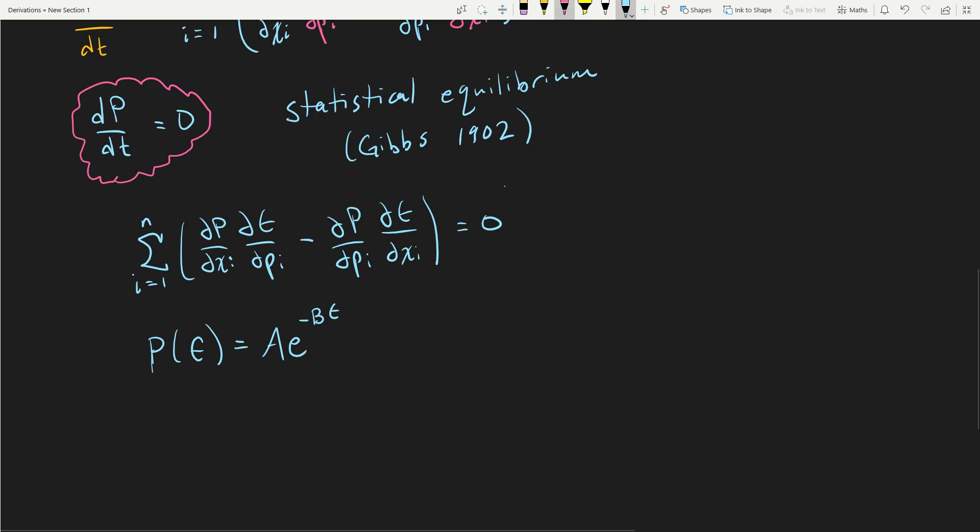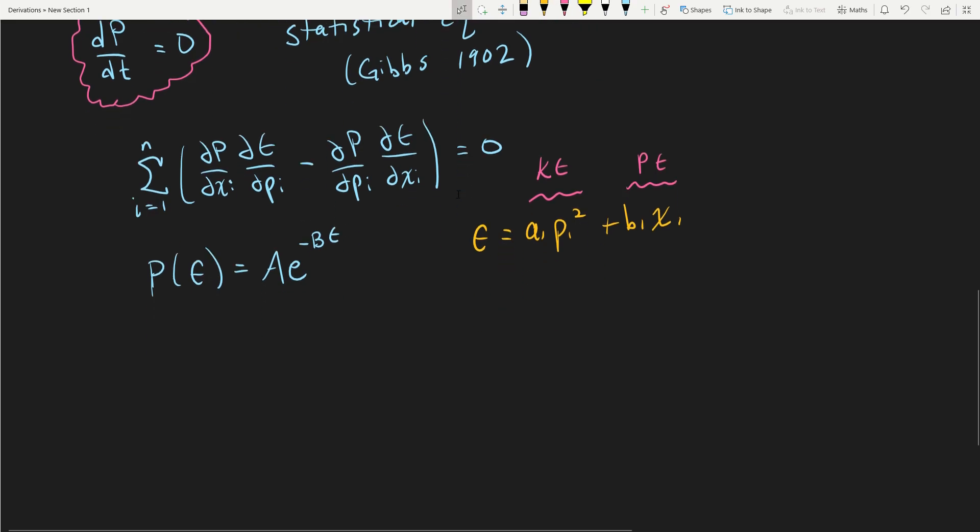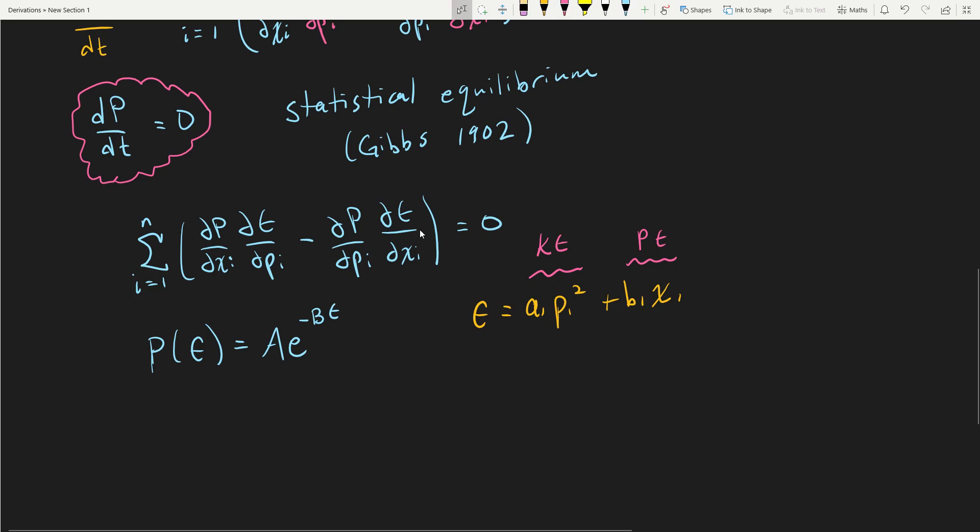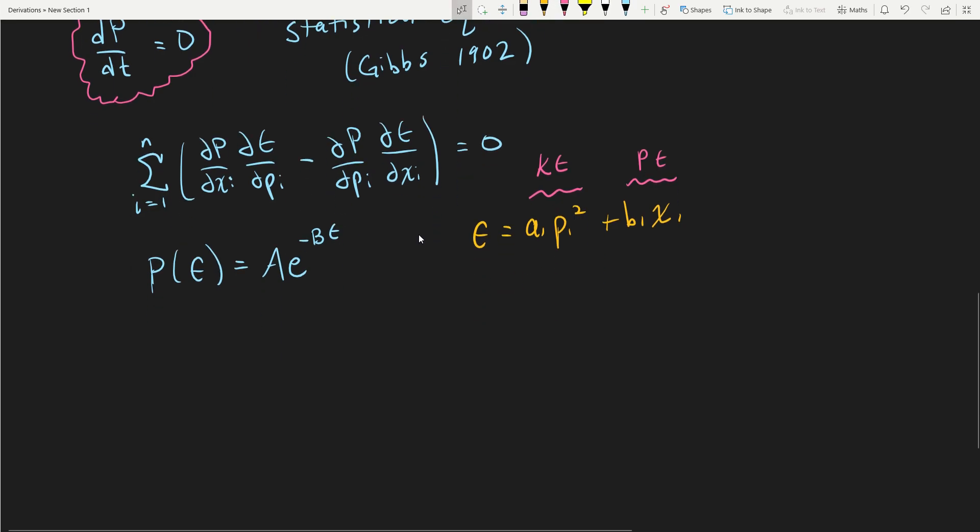To convince yourself this is true, take a simple energy function, a one particle system where you have a constant a1p1² plus b1x1, where this is your kinetic energy and this is your potential energy. Take this function and do these derivatives with this probability distribution. You will see that it is zero, so this differentiation is correct and this is the value. This is pretty much what we're going for.